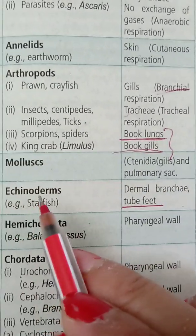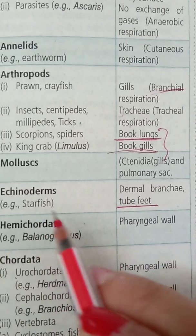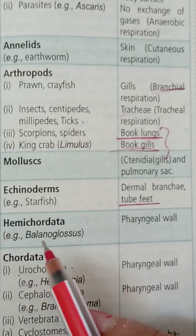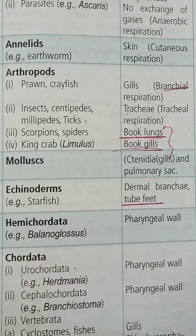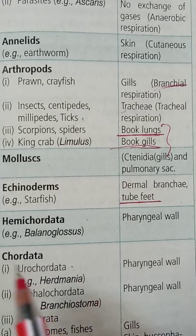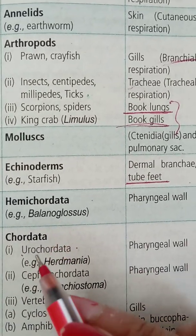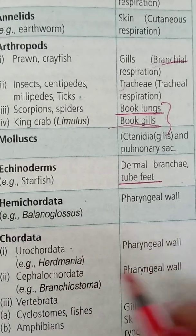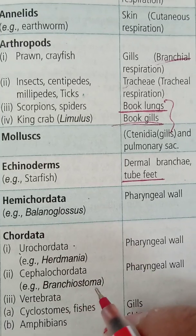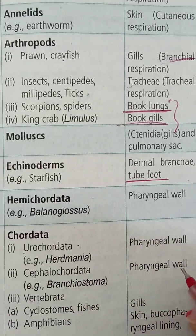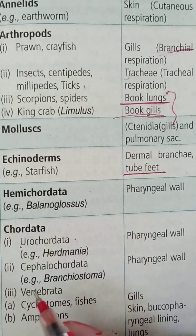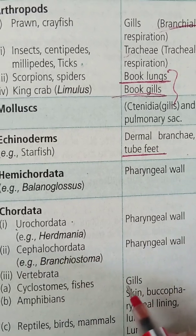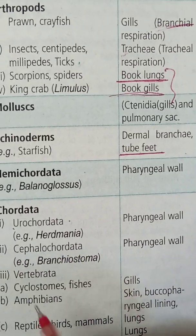For Echinoderms, example Starfish — the structure is dermal branchiae and tube feet. For Hemichordata, example Balanoglossus — the pharyngeal wall is involved. For Chordates: Urochordata, example Herdmania — pharyngeal wall is involved. Cephalochordata — pharyngeal wall is involved.